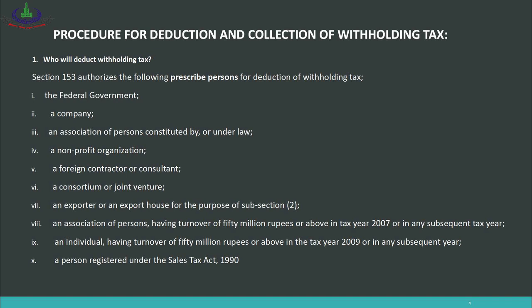Regarding the procedure for deduction and collection of withholding tax: students who go to work in companies and industries will perform withholding tax calculations on a daily basis. Regarding who will deduct withholding tax — the authorized person is called the withholding agent. Section 153 authorizes the following prescribed persons: the Federal Government, a company, an association of persons constituted under law, a non-profit organization, a foreign contractor or consultant, a consortium or joint venture, and an exporter or export house.